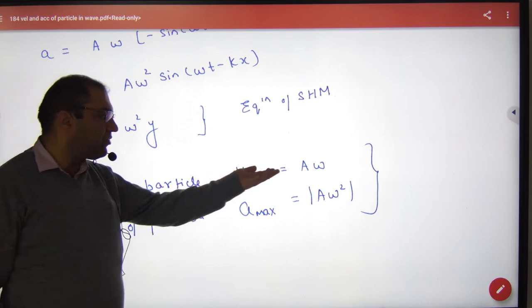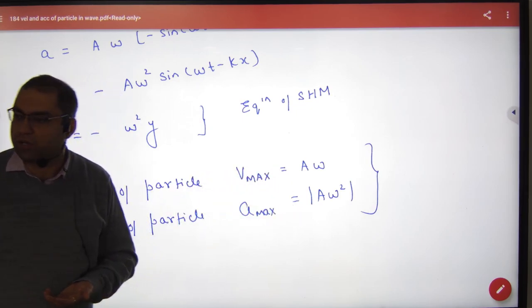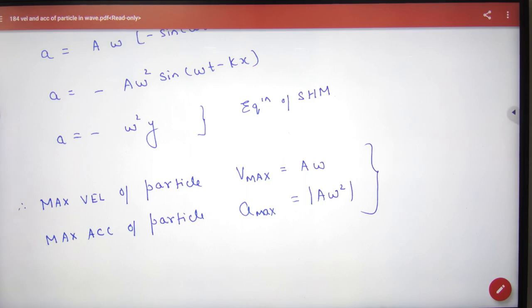So maximum velocity is A omega, and maximum acceleration is A omega squared. There is no new formula in this.